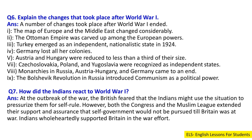Question 6: Explain the changes that took place after World War One. Answer: A number of changes took place after World War One ended. The map of Europe and the Middle East changed considerably. The Ottoman Empire was carved up among the European powers. Turkey emerged as an independent nationalistic state in 1924. Germany lost all her colonies. Austria and Hungary were reduced to less than a third of their size. Czechoslovakia, Poland and Yugoslavia were recognized as independent states. Monarchies in Russia, Austria, Hungary and Germany came to an end. The Bolshevik revolution in Russia introduced communism as a political power.